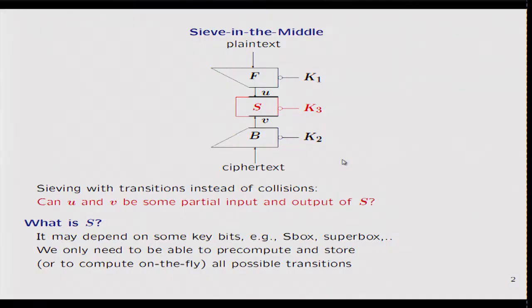The only important thing is that we need to be able to store or compute on the fly all possible transitions for this function S. If we can do so, then we can decide whether a given pair U, V corresponds to some valid input and output for S — in other words, whether there exists some input of S equal to U on certain bit positions providing an output equal to V on certain bit positions. This attack works if the set of all transitions for S can be used as a sieve for all pairs U and V.